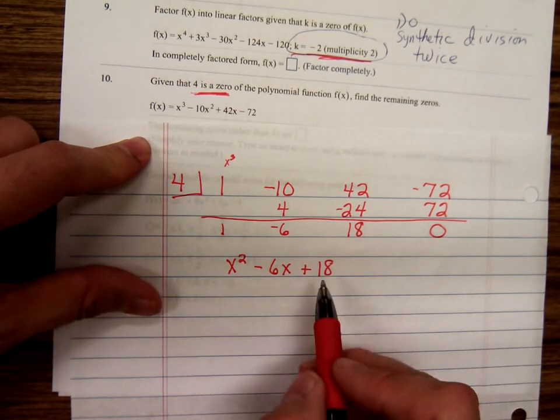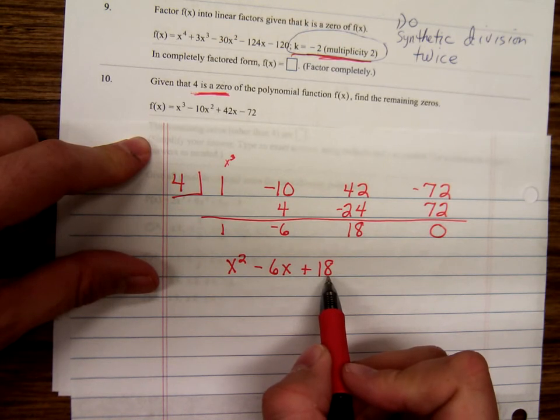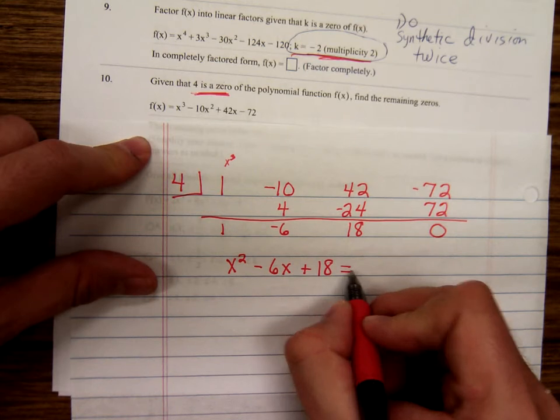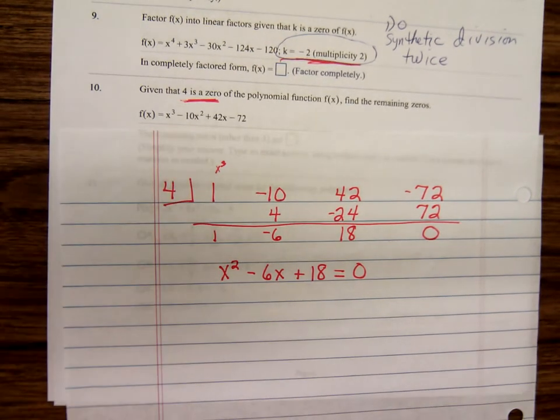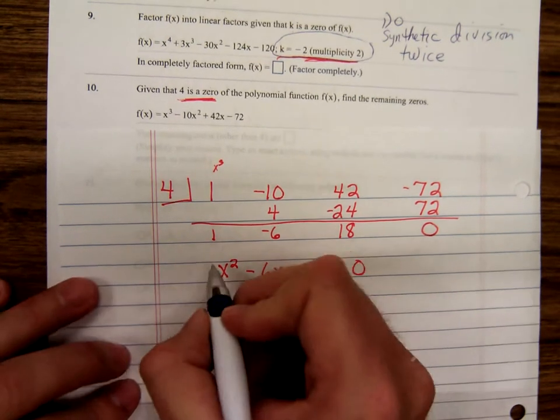So down here we'd have one x squared minus six x plus eighteen. The natural question is, how would we use that? Well, this isn't going to factor. One times eighteen, two times nine, three times six. You can give it a try if you want to, but it's not going to factor. So to figure out the zeros there, what numbers make it zero, you're going to have to use the quadratic formula.